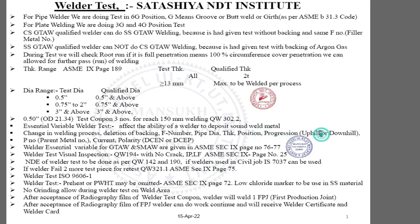Progression is another essential variable. There are two types: uphill progression, normally used in unit piping (refinery piping, power piping), and downhill welding, used in pipeline (cross country pipeline). Downhill means the welder starts welding from top and goes to bottom; uphill means the welder starts from bottom and goes upward. P number (parent metal number) is also essential — if the material changes, the welder has to give another test.